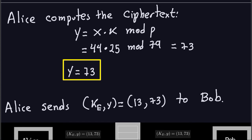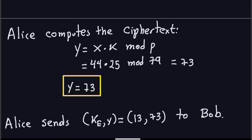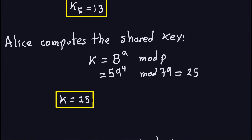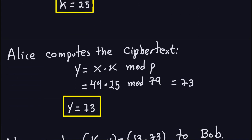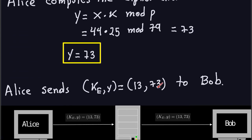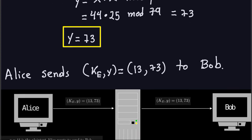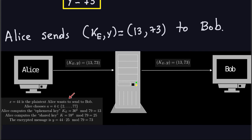Alice sends the ephemeral key, which is 13, and the actual ciphertext, which is 73. So she sends the pair (13, 73) to Bob through the insecure channel. Bob receives that pair of numbers.